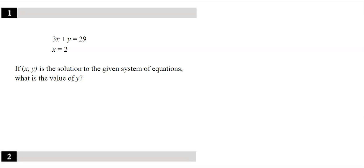Nice little system setup. Since it's already solved for x equals 2, I'm going to use substitution. I'm going to plug that in here. Get 3 times 2 plus y equals 29. So 6 plus y is 29, minus 6 from both sides. Looks like y should be 23. And that's what we're after, the value of y.